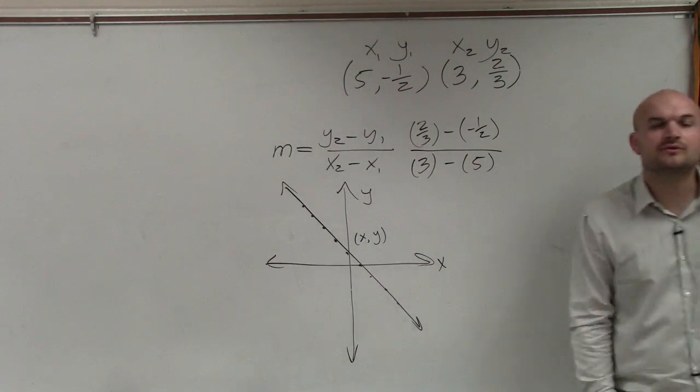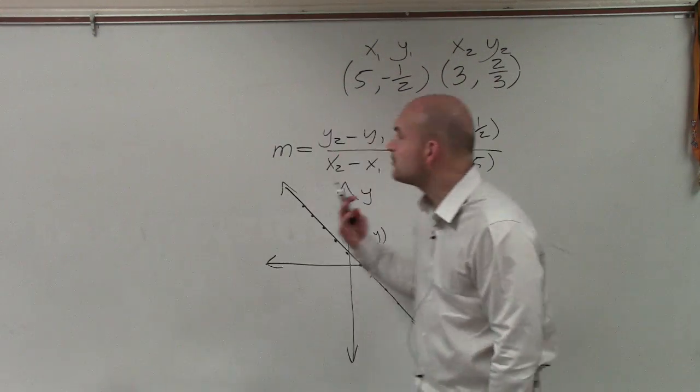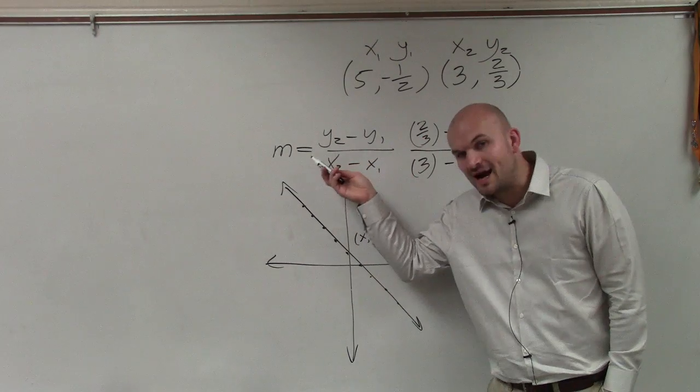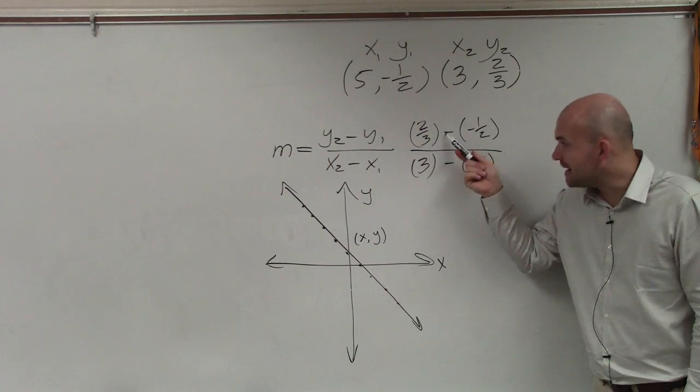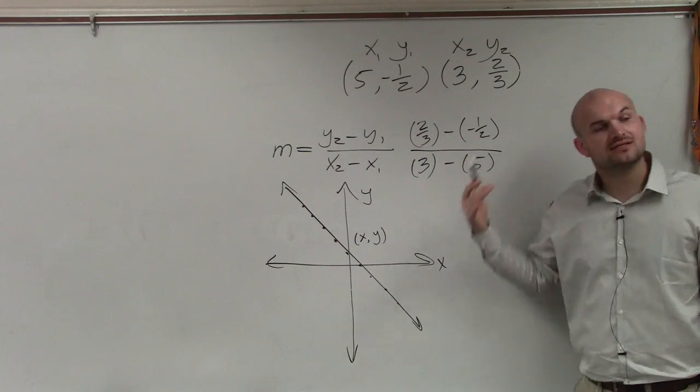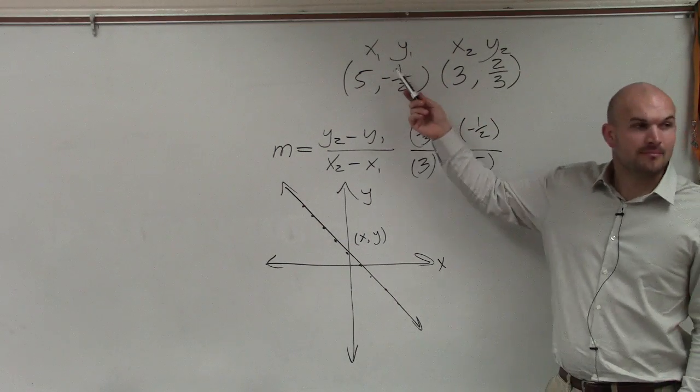Now, I know a lot of you do not like to use parentheses because you think it's just extra steps that's not going to really help. But it's very important for us to understand, this is y2 minus y1, y2 minus y1. Because the most common mistake that people will make is they'll say, oh, 2 thirds minus 1 half.